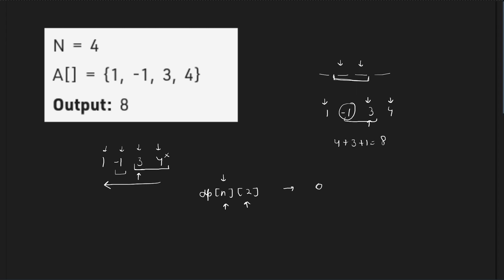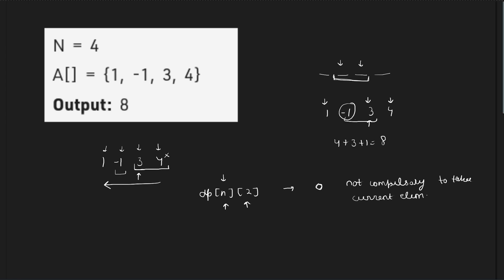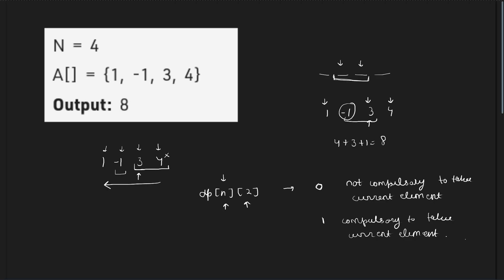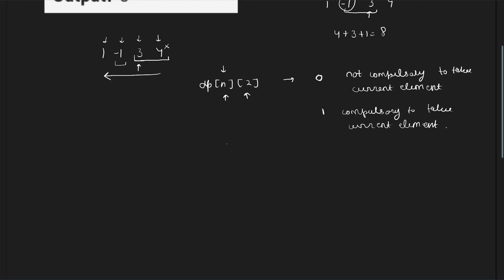Let us say 0 denotes that I have taken the previous element and it is not compulsory to take the current element. So dp[i][0] will denote that we are at the i-th index and 0 denotes that it is not compulsory to take the current element. Now if it is 1, that means it is compulsory to take the current element. dp[i][1] will denote that I am at the i-th index and it is compulsory to take the current element because I have not taken the previous element.